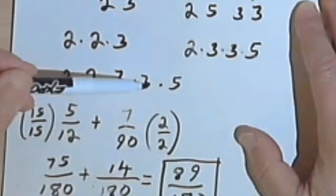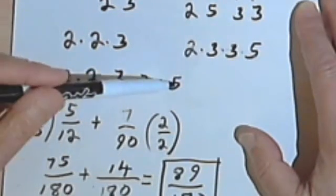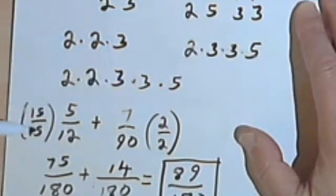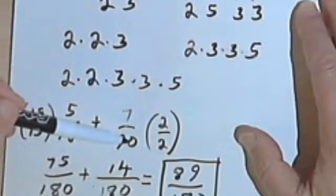Well I could either multiply by 3 and then multiply by 5, or multiply by 3 times 5, which is 15. So I multiplied by 15 over 15. I did the same thing for my second fraction.